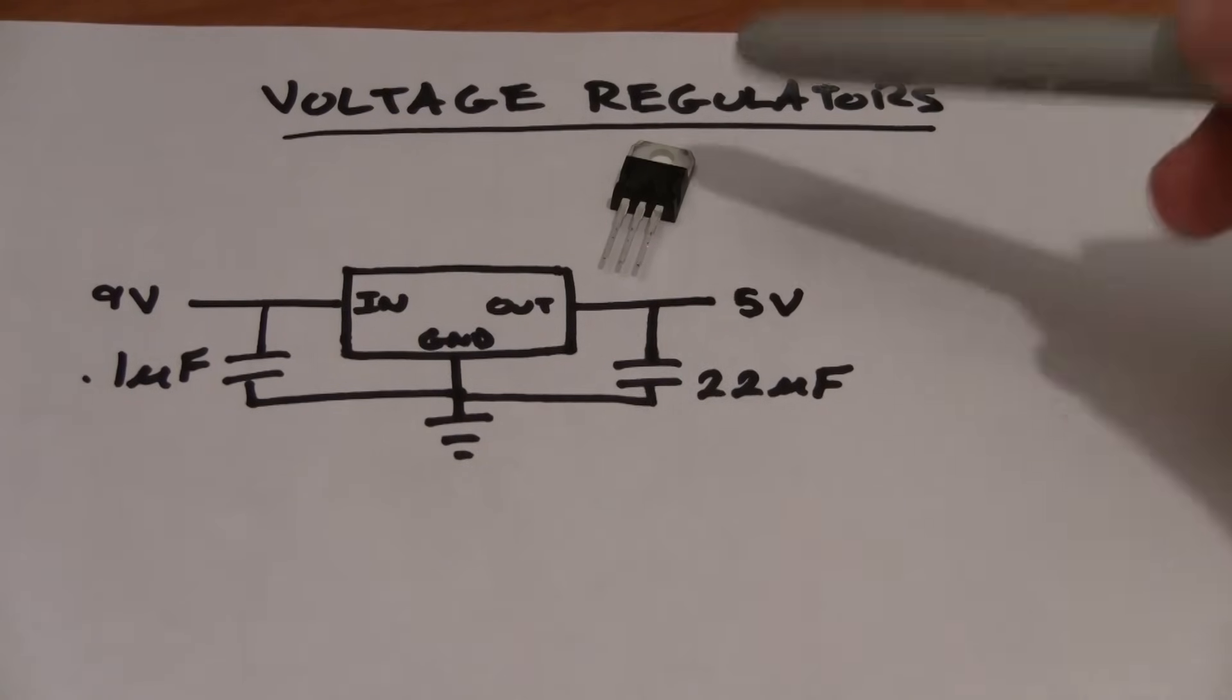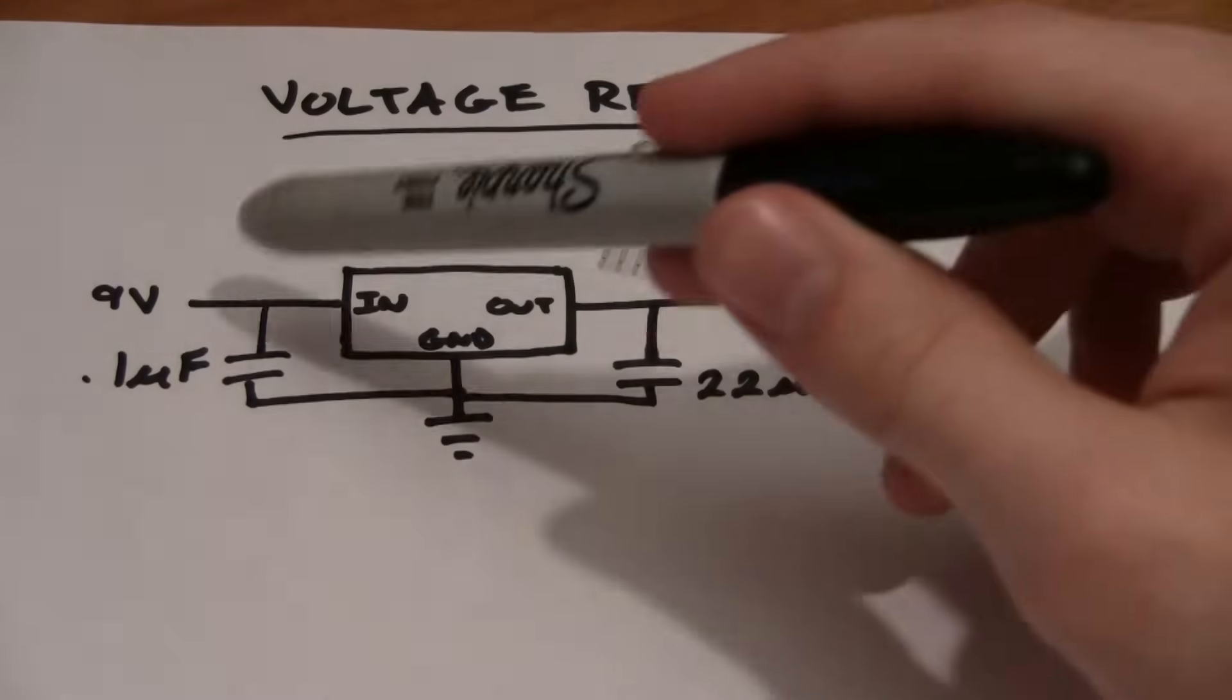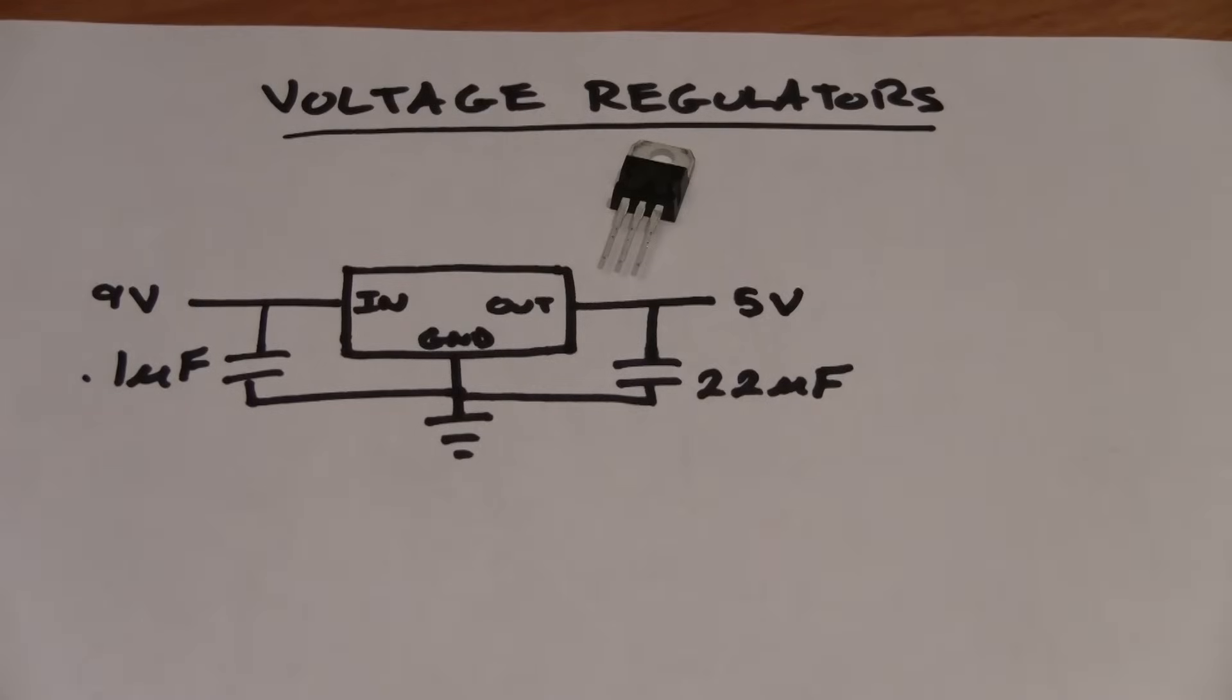The other key thing to remember when using voltage regulators is that you always have to use these decoupling capacitors on both power rails. The reason being is that the capacitors essentially act as a reservoir for electricity that holds the excess as the voltage regulator does the conversion from higher voltage to a lower voltage and removes ripples and just basically makes sure that you have a clean output voltage that's perfect for working with. Let's see what happens when we put this voltage regulator into a circuit.